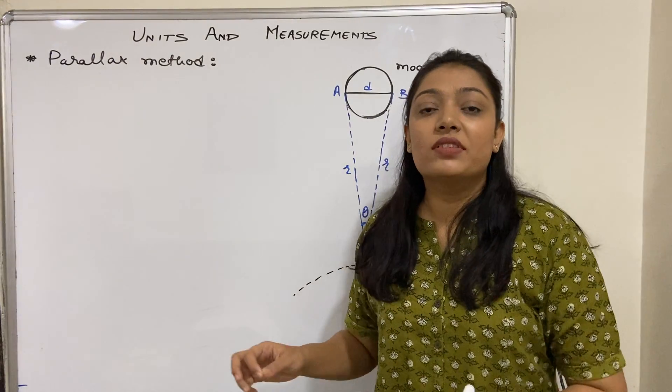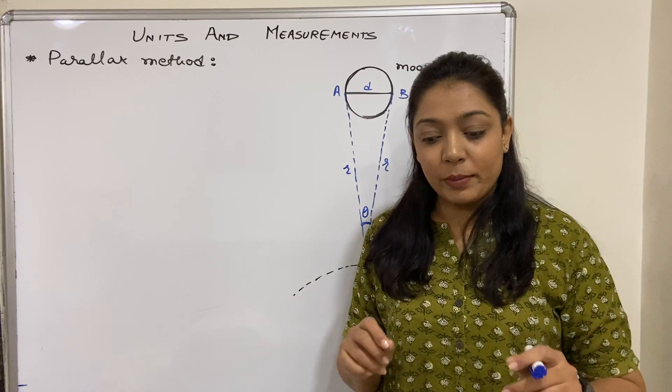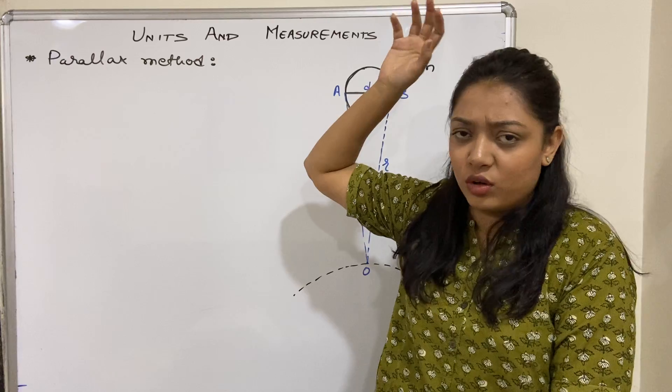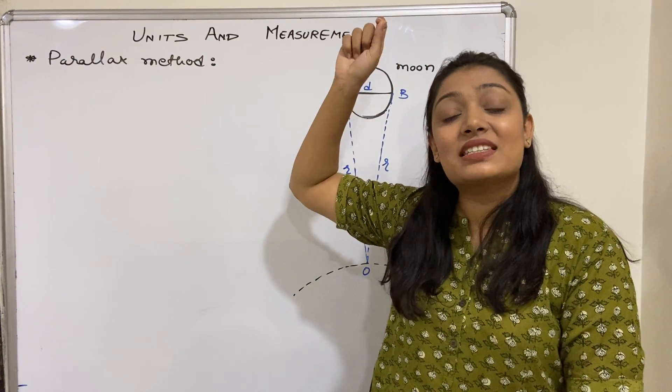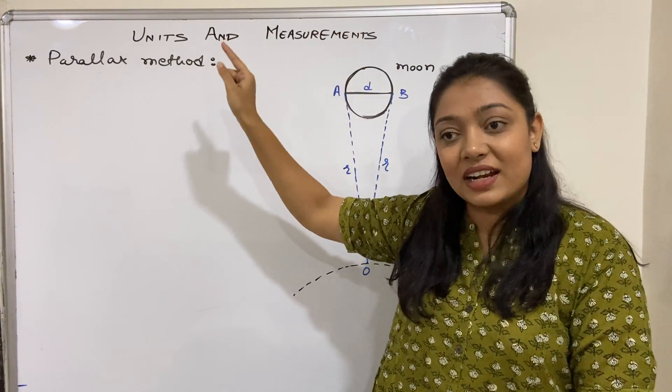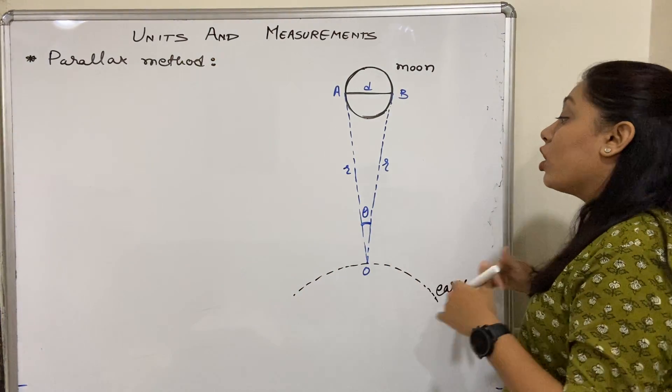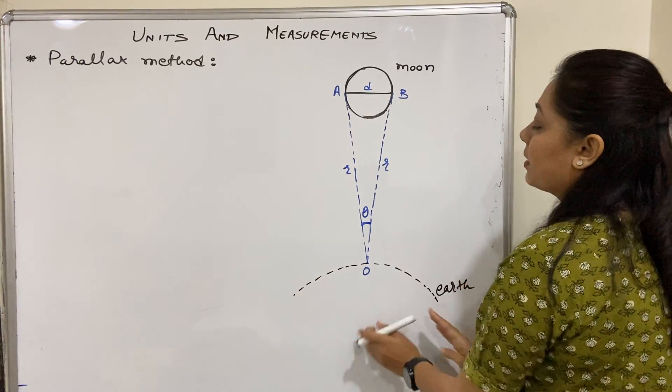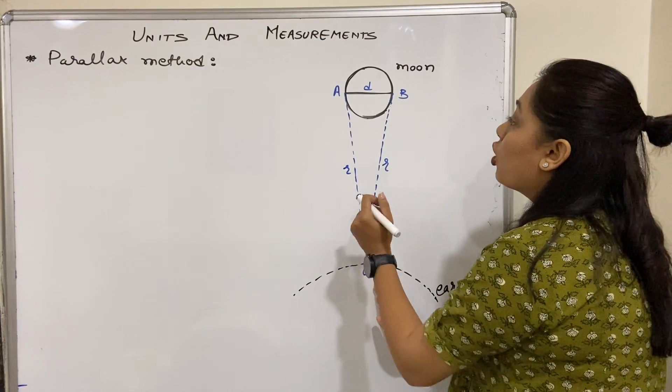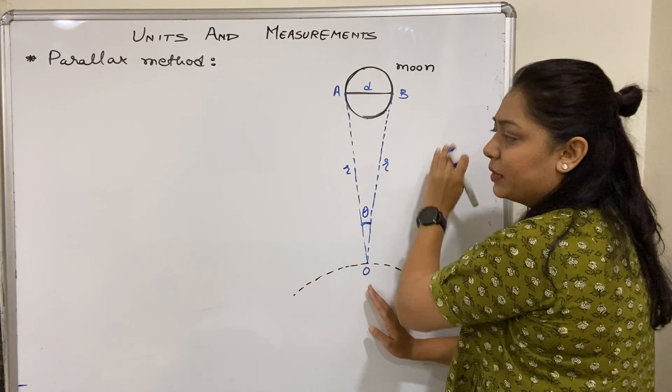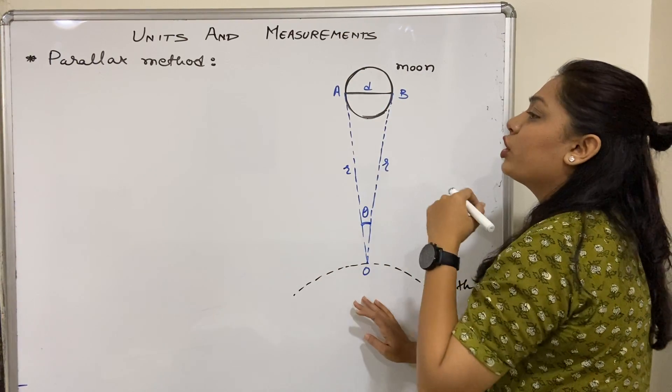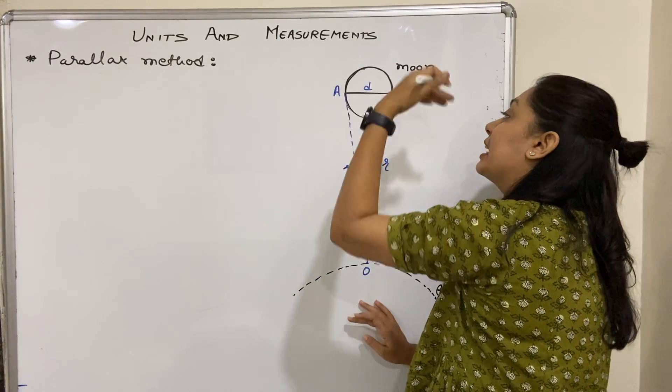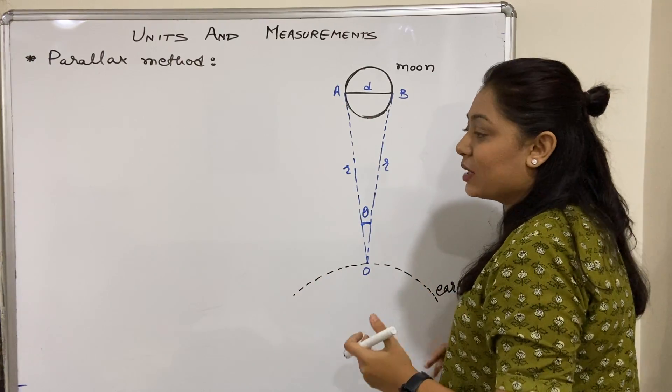Just like in the previous video, we understood how to measure the distance from earth to some planet, star, or moon through the parallax method. The parallax method is also useful for another thing: from earth we can measure the diameter of celestial objects at some distance.